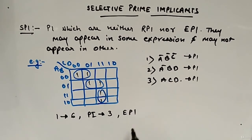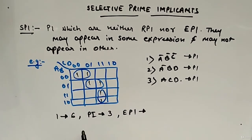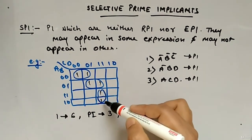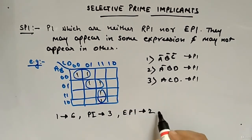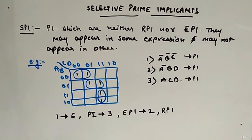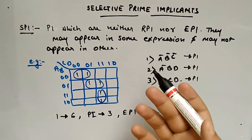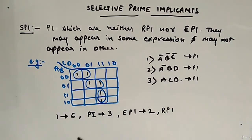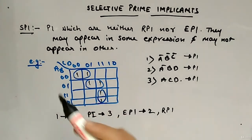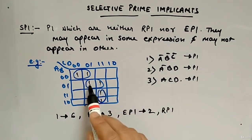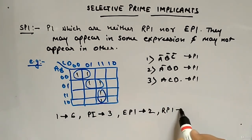What about essential prime implicants? Because of this min term and this min term, this group and this group are essential prime implicants. So two essential prime implicants, because these two min terms have only one option — this and this — and that's the reason these groups are essential prime implicants. What about redundant prime implicants? Redundant prime implicants are those where each of the min terms should be part of essential prime implicants. The only remaining group — none of its min terms are part of essential prime implicants. So redundant prime implicants is zero.